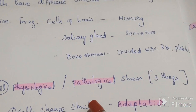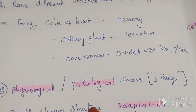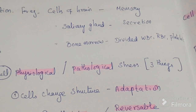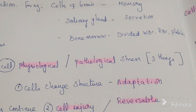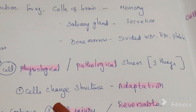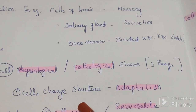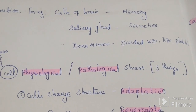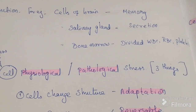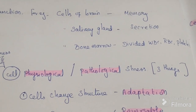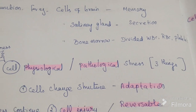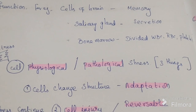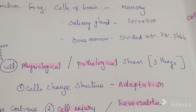Whenever any stress comes to a cell — it may be physiological or pathological — three things can happen. First, the cell changes its structure to overcome the stress. That change is called cellular adaptation. The cell does some structural changes in order to survive, and that is called cell adaptation.